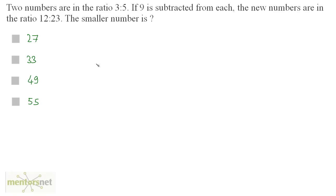Two numbers are in the ratio of 3:5. If 9 is subtracted from each, the new numbers are in the ratio of 12:23. What is the smaller number? The numbers are in the ratio 3:5, so I can say that the two numbers are 3x and 5x, where x is the common factor between those two numbers.